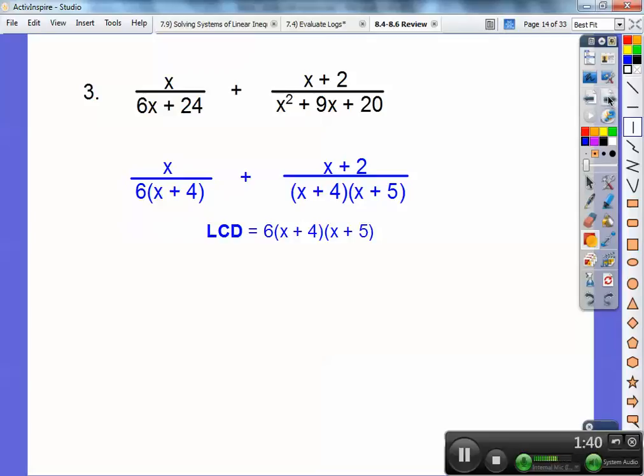I'm going to multiply each fraction times 1, so it doesn't change the value, but it's going to be the missing piece of this LCD. This one's missing x plus 5, so I'm going to go x plus 5 over x plus 5. This one's missing 6, so 6 over 6 is going to go over here. Remember, that's just 1. Those red guys are just 1.